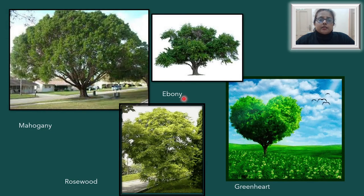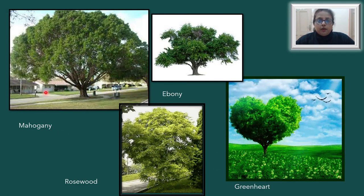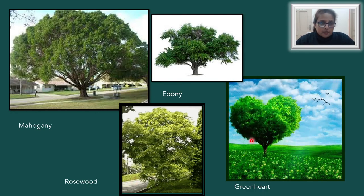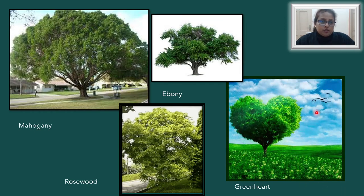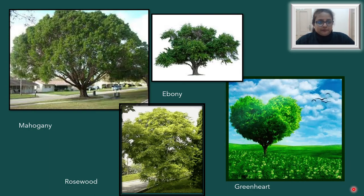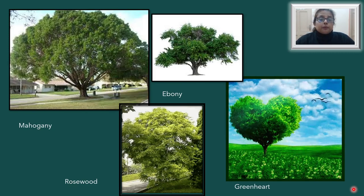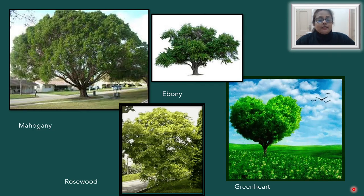Several important and different varieties of trees are found in the equatorial regions: mahogany, ebony, rosewood, and the greenheart — the greenheart tree looks exactly like a heart shape. Also rubber trees — these are the most prominent trees found in the equatorial region.